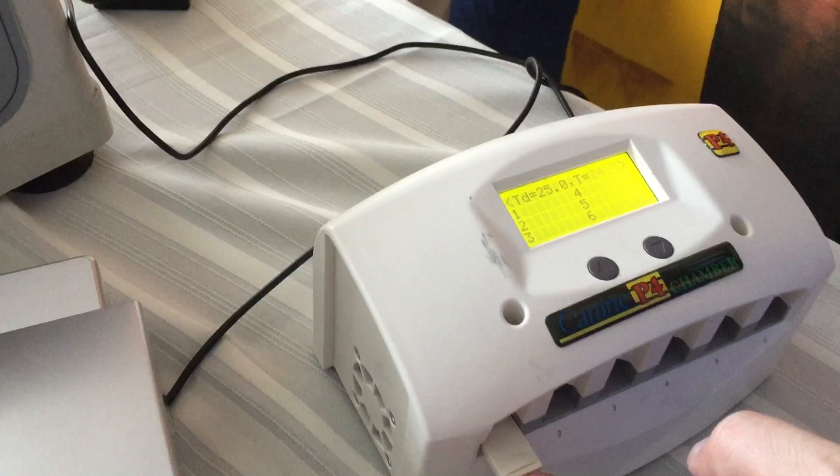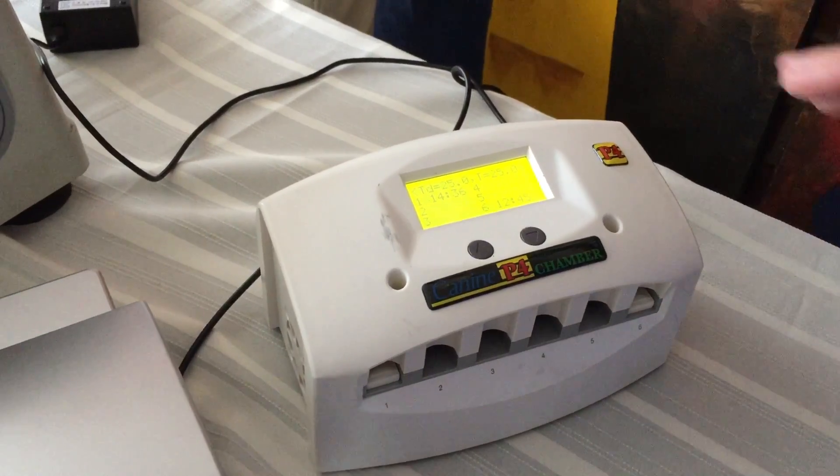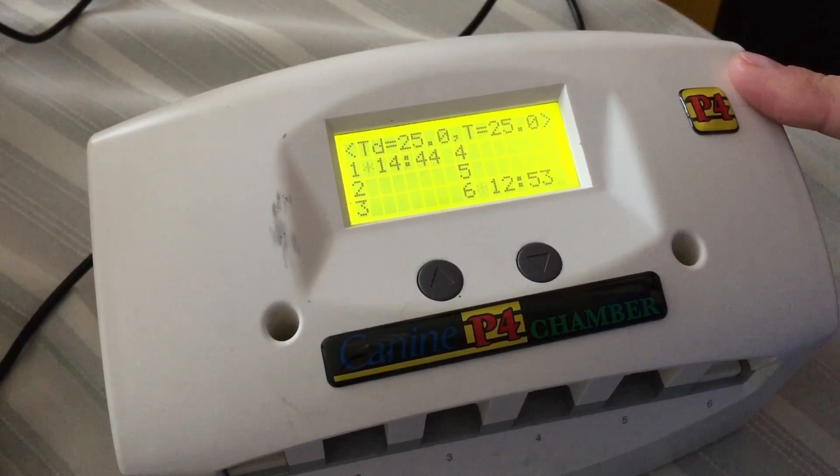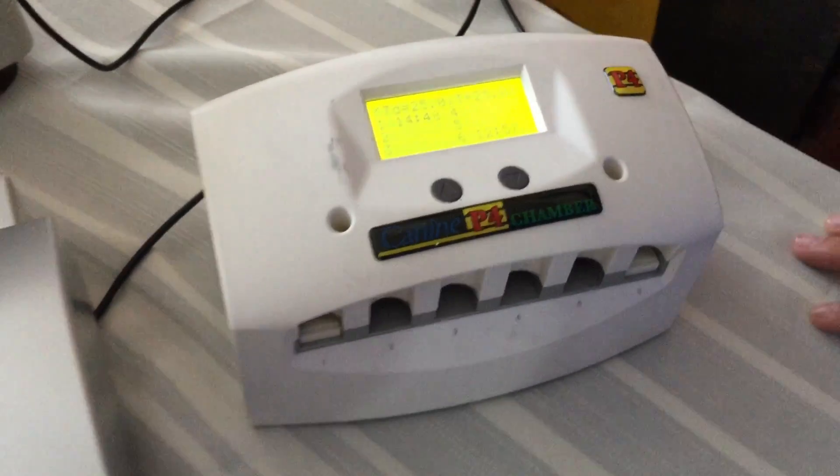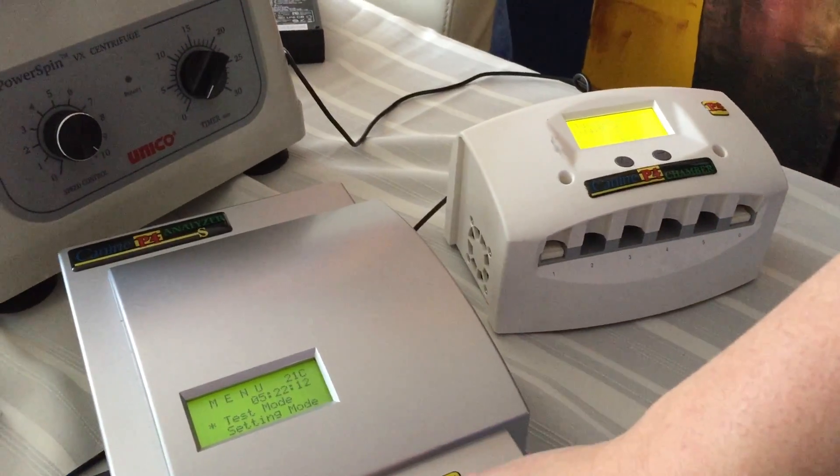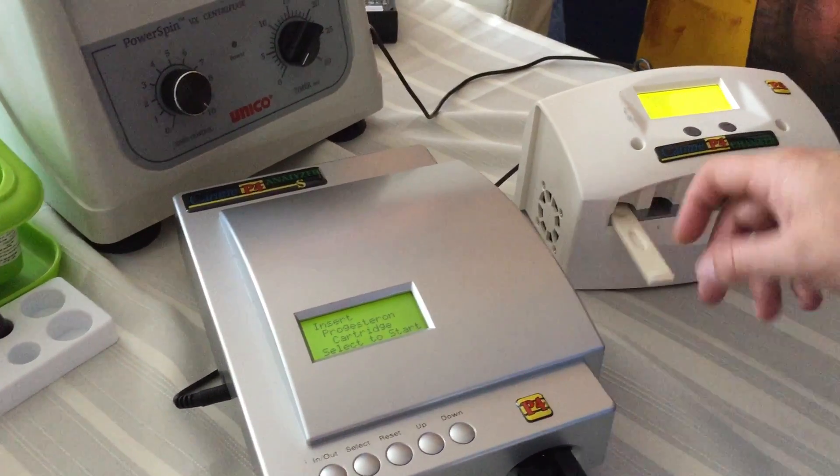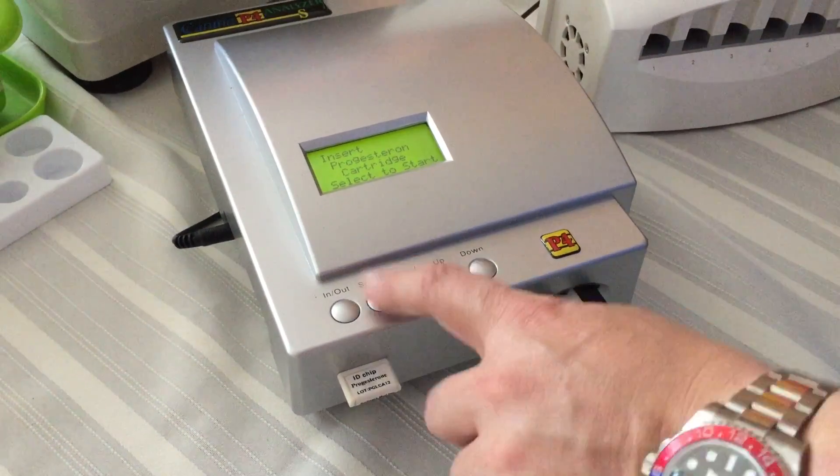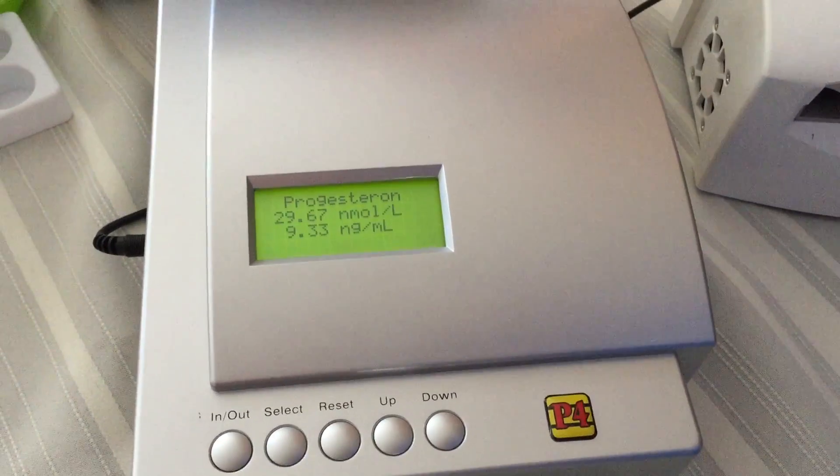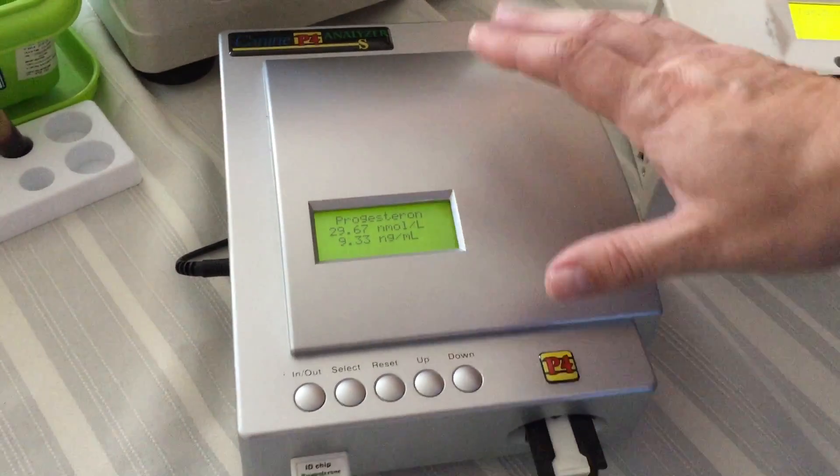Okay, so we've been documenting the progesterone levels for the past three days. Three days ago was 1.48, yesterday it was 2.47, so that means she is about to ovulate. And today we're gonna see what her levels are. Okay, so here's the test. Let's select and let's see what she's on. Alright, so she already ovulated. She went from 2.47 to 9.33.